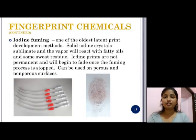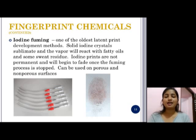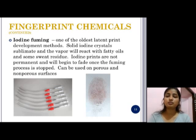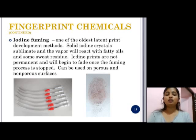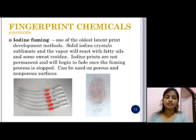The next technique is iodine fuming. It is one of the oldest latent print development methods. Solid iodine crystals sublimate and the vapor reacts with fatty oils and sweat residue. Iodine prints are not permanent and will begin to fade once the fuming process ends. It can be used on both porous and non-porous surfaces and gives sharp impressions on documents. One advantage of this technique is its fuming nature, though it can disturb some evidence.